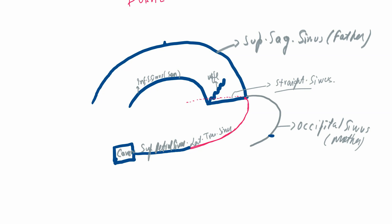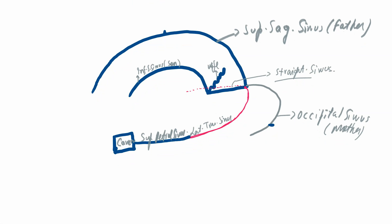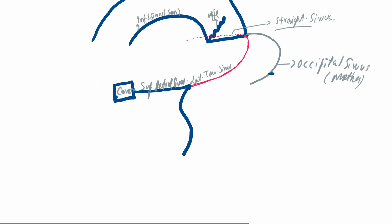After this marriage, the lateral transverse sinus becomes curved. To make it straight again, we allow it a second marriage — this time with the inferior petrosal sinus, which is also coming from the cavernous sinus.